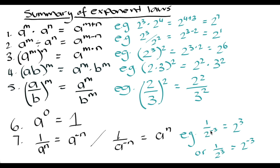Finally, if we have a denominator raised to an exponent, that is the same thing as the base raised to the negative of the exponent. For example, 1 over 2 to the negative third power means the 2 moves to the numerator with the inverse exponent — so it becomes 2 to the positive 3. Conversely, 1 over 2 to the positive third power becomes 2 to the negative 3. That is the summary of all our exponent laws and some important tricks to remember.